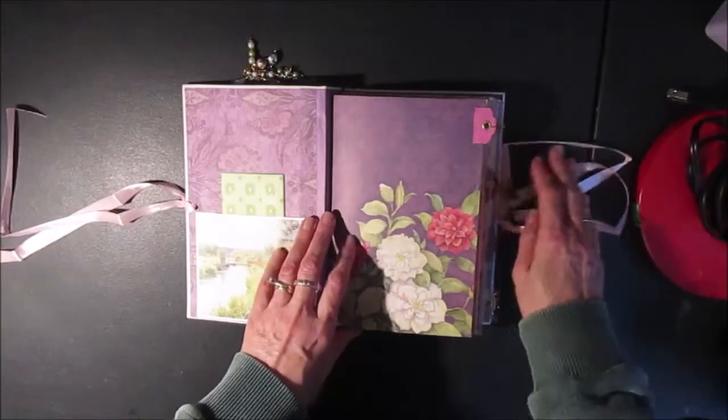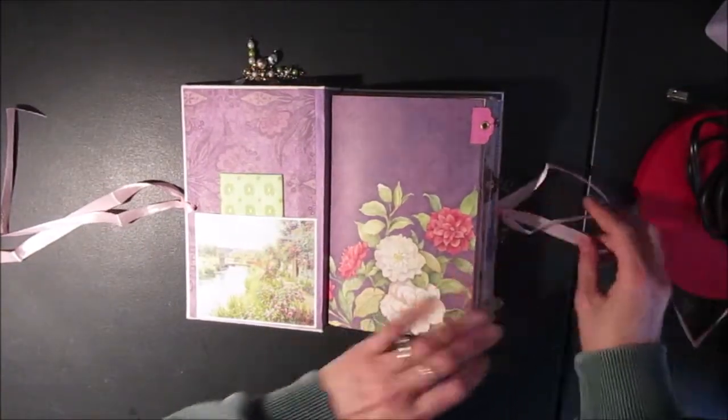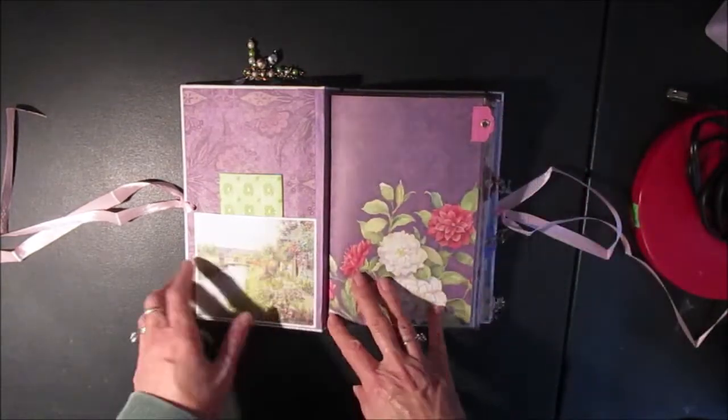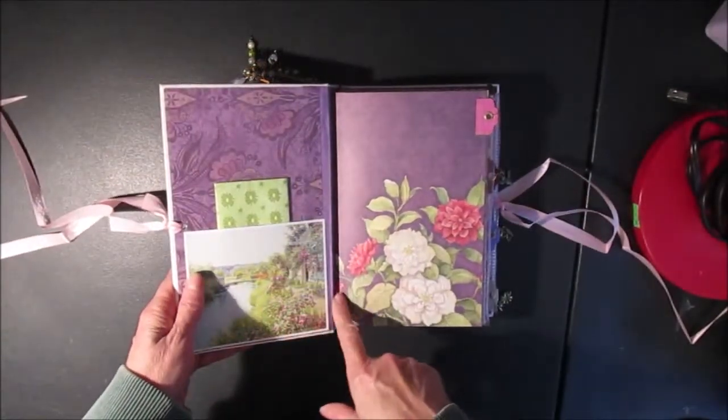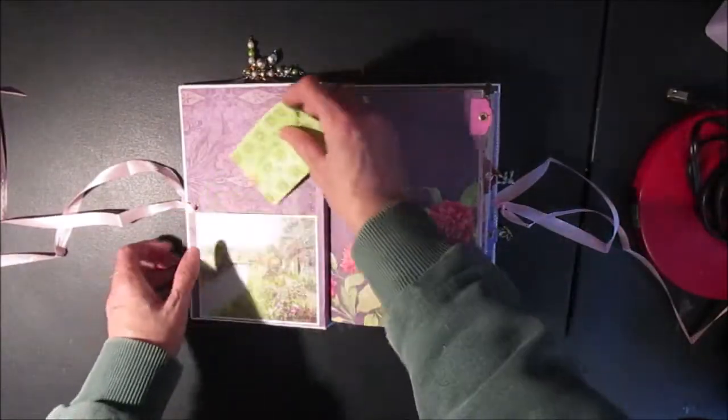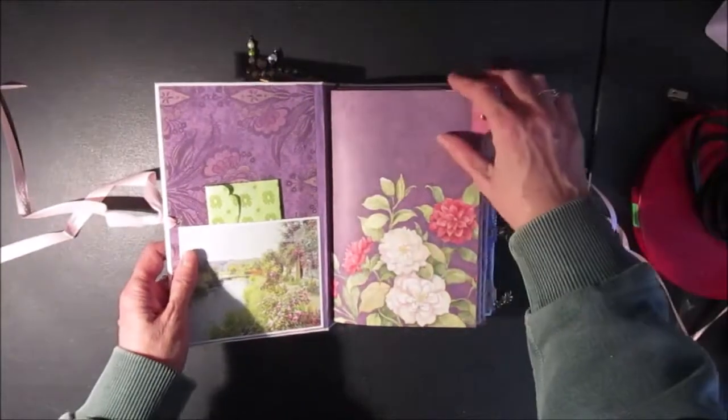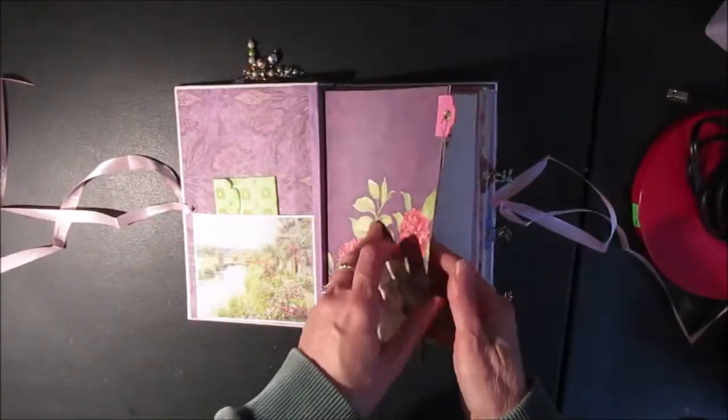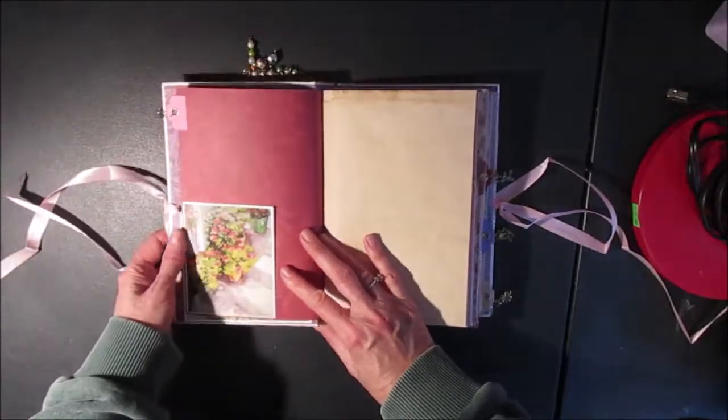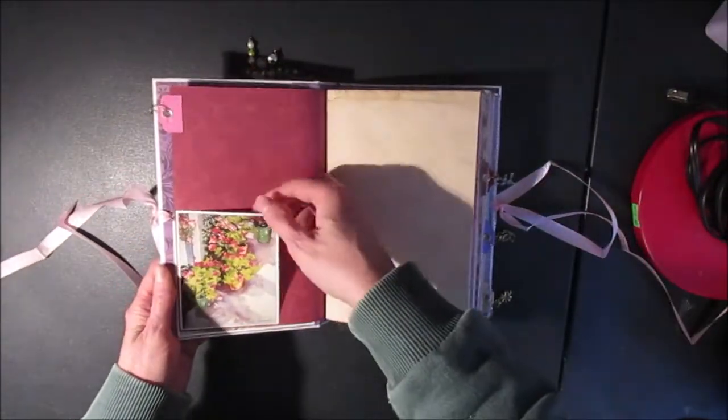I didn't do any stamping in this one. I tried to keep as much space for writing as possible. I did add some pictures of flowers and gardens. So here on the inside cover I have a little envelope that's just tucked in here. And here's the first signature. I love the colors in this paper.